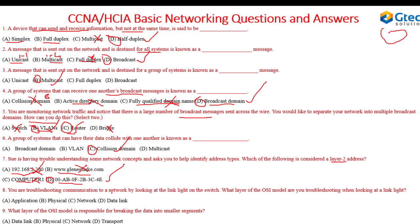Question eight: you are troubleshooting communication on a network by looking at the link light on the switch. What layer are you troubleshooting? Application layer provides the interface between application software and the network. Network layer deals with routing and best path selection, IP addressing. Data link layer handles forwarding of frames and MAC addressing. Since we are dealing with hardware components like link lights, the answer is physical layer.